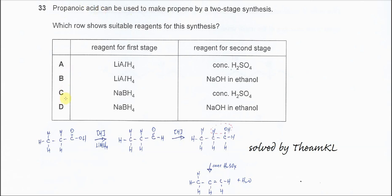In order to reduce the propanoic acid or carboxylic acid, we need to use lithium aluminum hydride. Only lithium aluminum hydride can be used to reduce carboxylic acid. Sodium borohydride cannot be used.